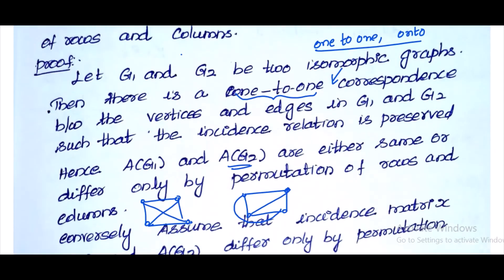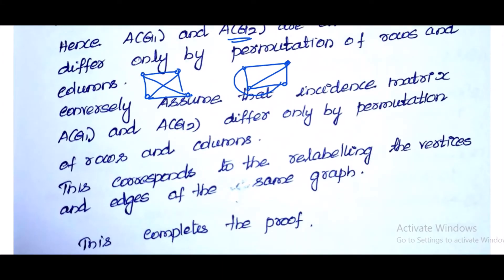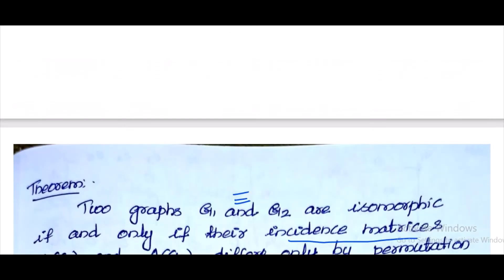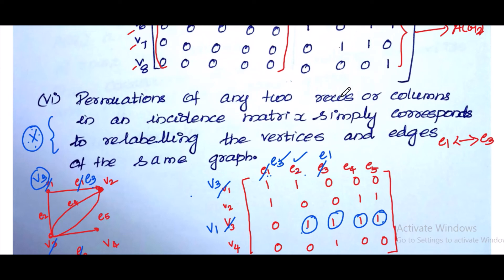The statement is: A(G1) and A(G2) differ by permutation of rows and columns. That is, we exchange two rows or columns — for example, exchanging V1 and V3 — which corresponds to simply relabeling the vertices. Permutation of any two rows or columns in an incidence matrix is simply the relabeling of vertices and edges.